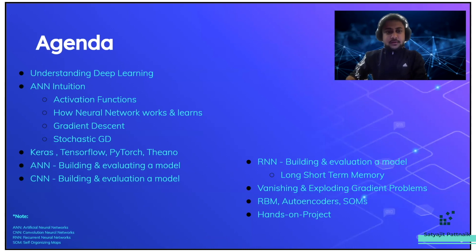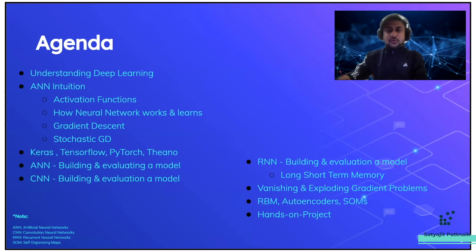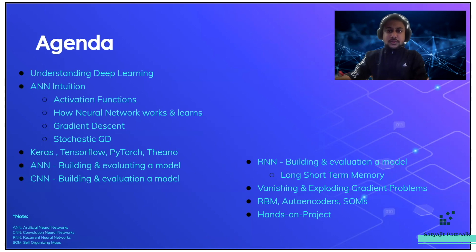The same approach goes with CNN — Convolutional Neural Networks. We'll build a convolutional neural network, take some image classification use cases, and evaluate that model. Our next topic will be RNN — we'll go through the same building and evaluation process and cover fine tuning parameters. Then we have Long Short-Term Memories, and we'll also learn about vanishing gradient and exploding gradient problems in neural networks.